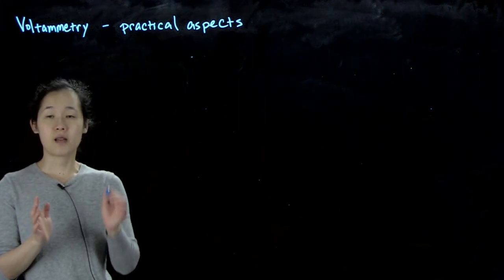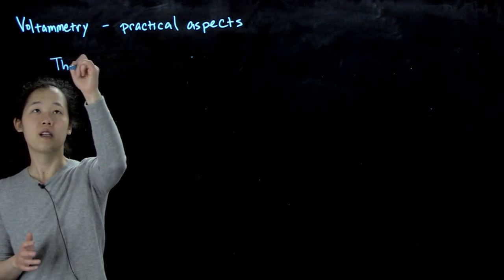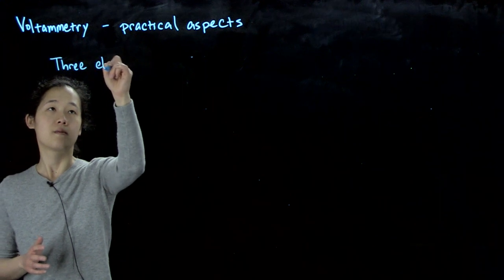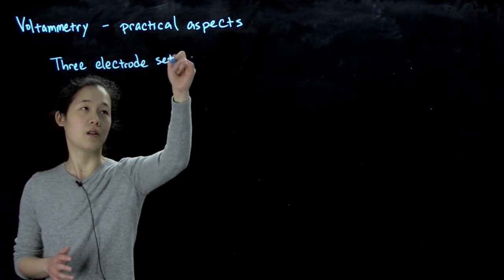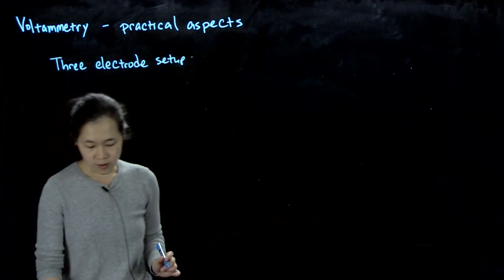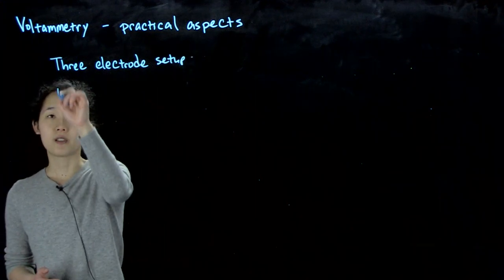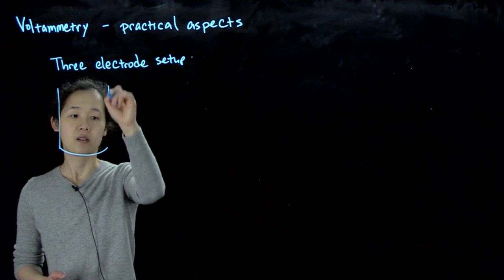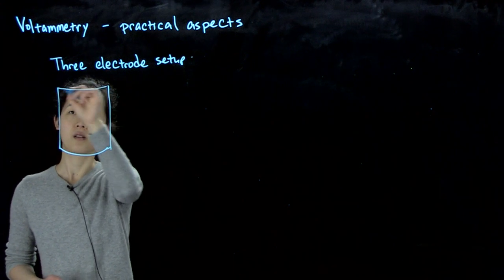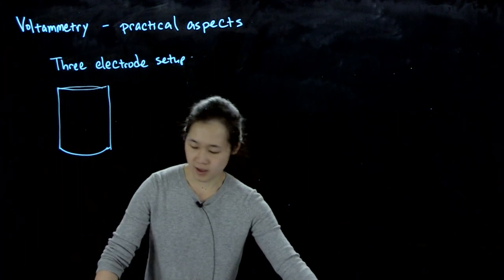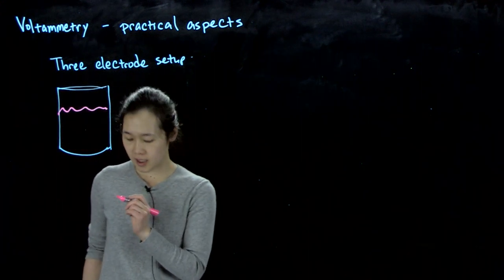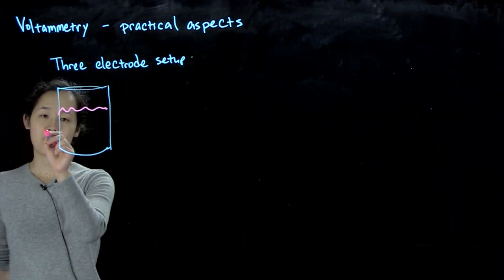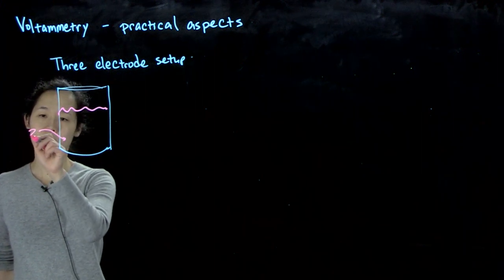The typical setup is the so-called three-electrode setup. If we have a solution in a beaker filled with something, the question is, if we want to measure the potential of some change of some analyte, how do we do that?